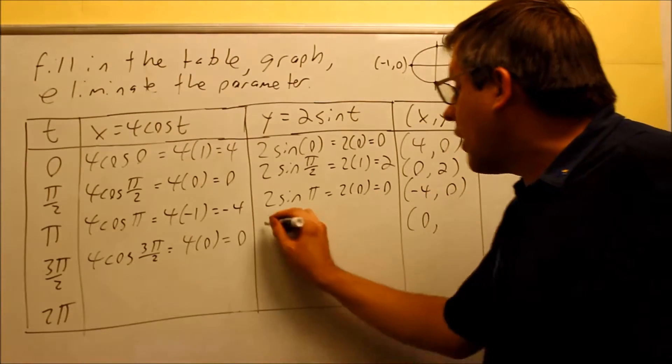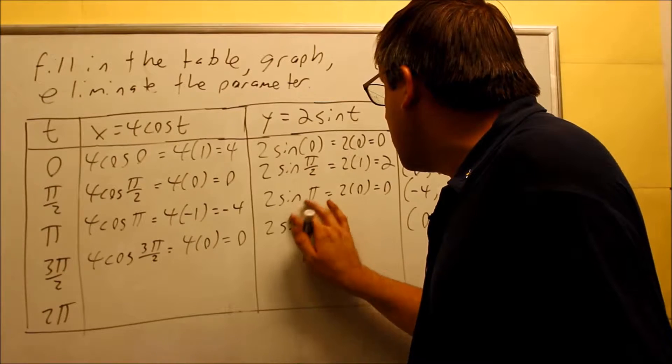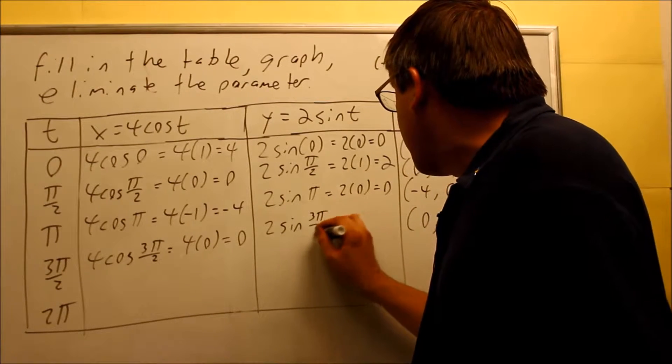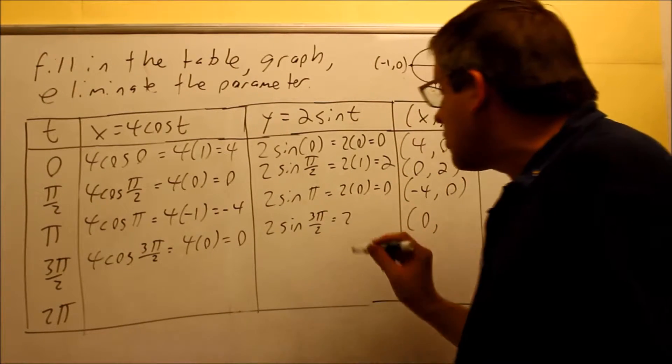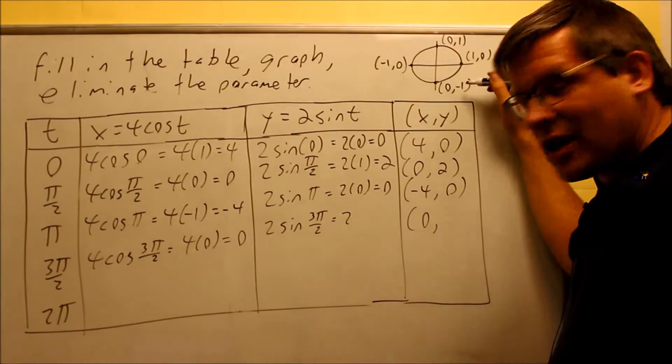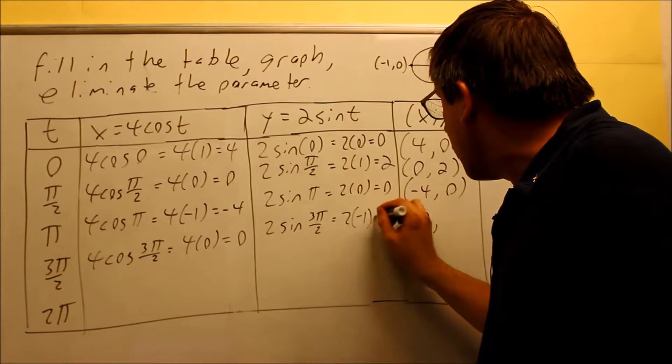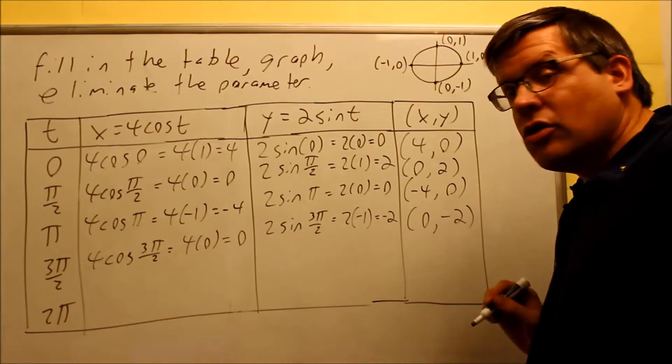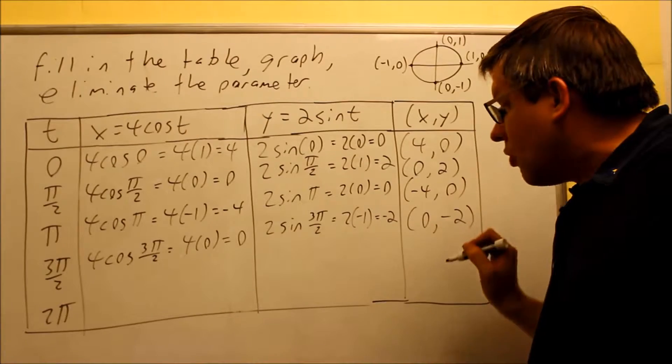Okay, then I have 2 sine 3π/2. And that's going to be 2 times sine of 3π/2. That's the y-value of 3π/2. That's negative 1. So 2 times negative 1 is going to be negative 2. So now I have (0, -2) as my next coordinate.